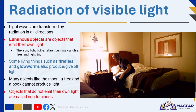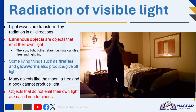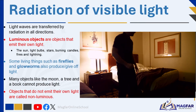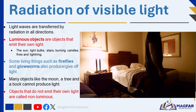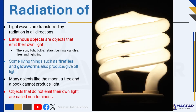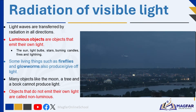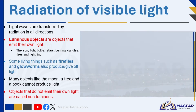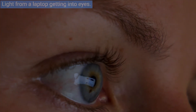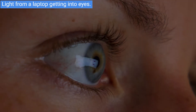Luminous objects are objects that emit their own light. Non-living things that are luminous include the sun, light bulbs, stars, burning candles, fires, and lightning. We see luminous objects because they produce or emit light that enters directly into our eyes. The sun is the main source of light on earth.